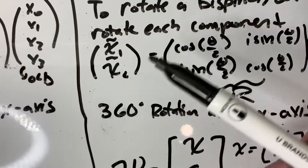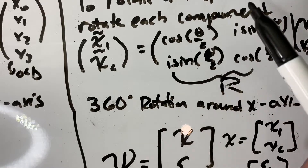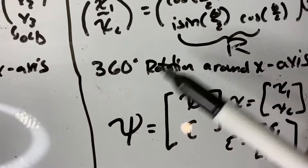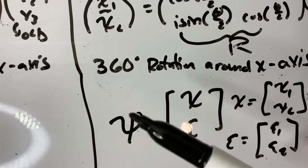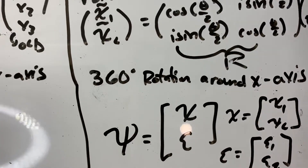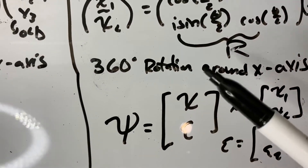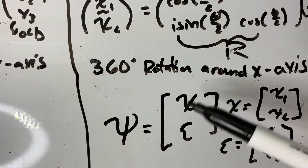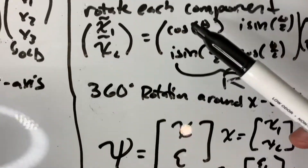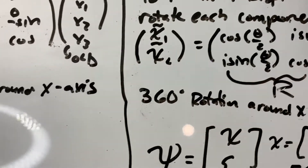This is how you rotate the left chiral spinor, and the rotation matrix is actually the same exact thing for the right chiral spinor. To rotate the right chiral spinor, it's really simple — all we do is stack this rotation matrix onto itself, since we rotate the left chiral spinor and we rotate the right chiral spinor, which corresponds to stacking this matrix on top of itself.